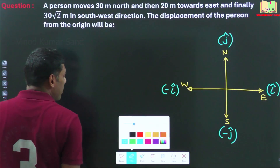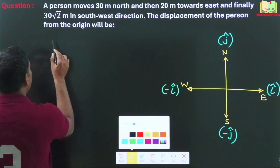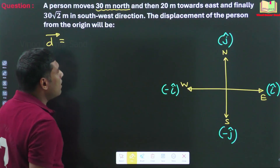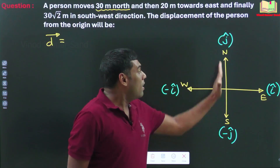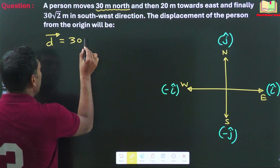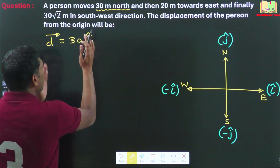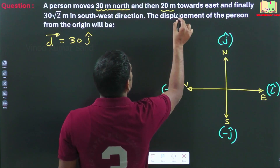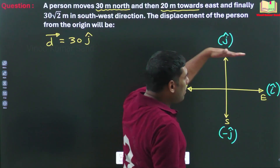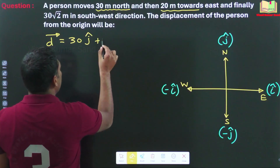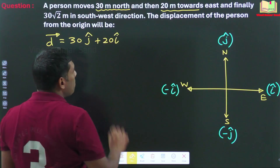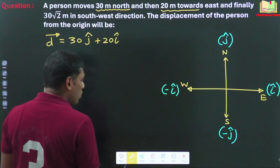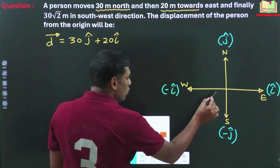Now, let us write the displacement as d vector. The person initially is going 30 meter north. 30 meter north can be simply written as 30 j cap — I will write the meter unit at the end. Then 20 meter towards east means we write it as 20 i cap. Then finally, 30 root 2 meter in the southwest direction, which is this one.